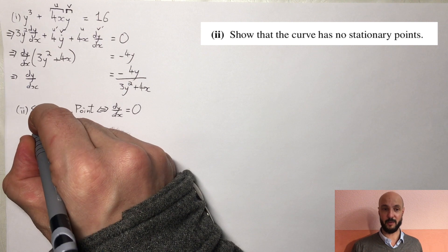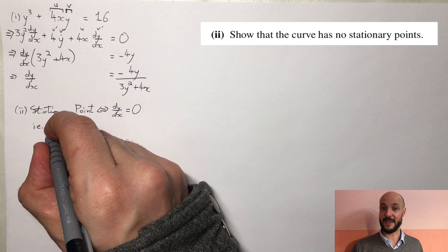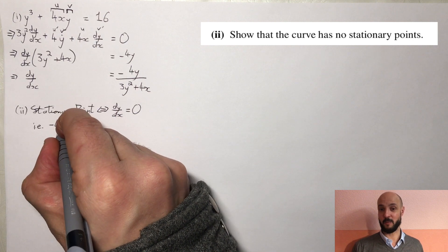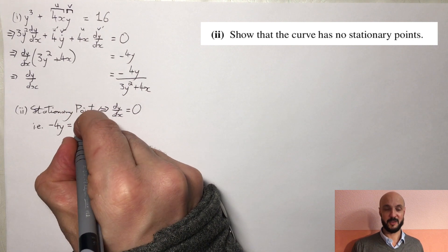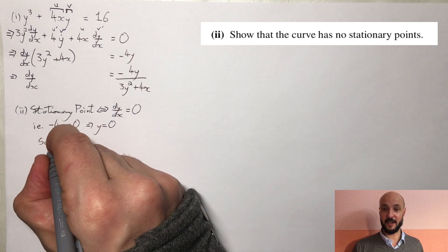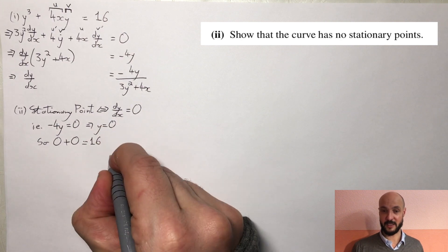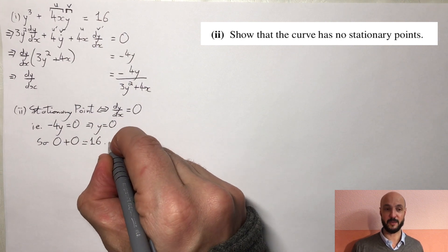So we want dy/dx to equal 0, which in this case the only way we're going to get that minus 4y over 3y squared plus 4x equal to 0 is if the minus 4y equals 0. So that means y has to equal 0. So if we put that into our first equation y cubed plus 4xy equals 16, we need 0 plus 0 equals 16. Well of course that's not possible, so there's no possible stationary points which is what we needed to show.